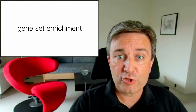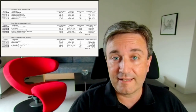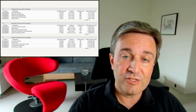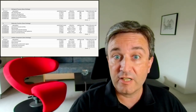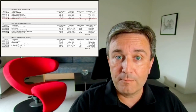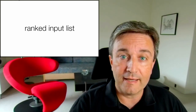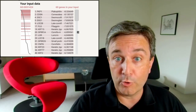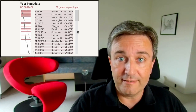Once you hit search, it will perform the geneset enrichment analysis and you will see the results presented again in tables. The columns are a bit different — for example, telling whether a certain geneset is enriched near the top of the list or the bottom of the list. You can inspect this further by selecting a term, and when you do that, it will be highlighted in the table and the corresponding proteins will be highlighted in the ranked input list, showing that the proteins corresponding to the selected term are preferentially near the top of the list.